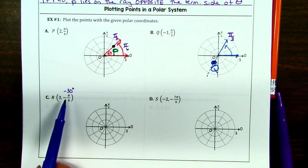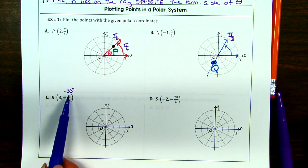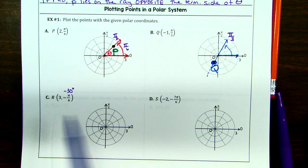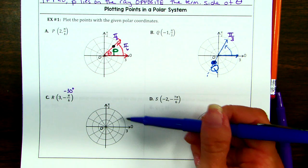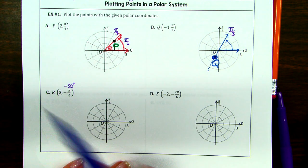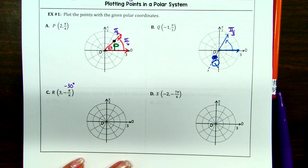For letter C, you have negative 30 degrees — I have negative pi over 6. They're the same thing: 30 degrees is the first angle on the unit circle, also pi over 6. One's degrees, one's radians.